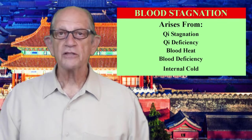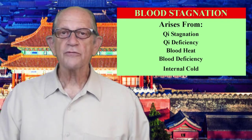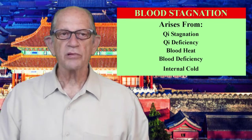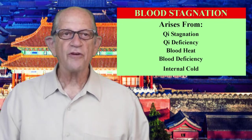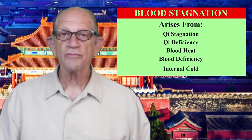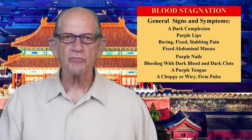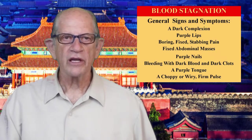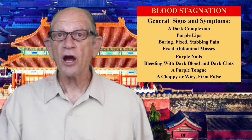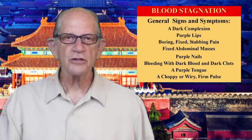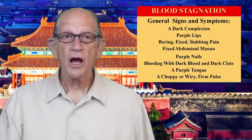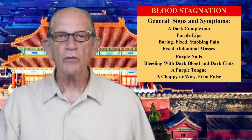The fourth is blood deficiency. Over time, blood deficiency can cause qi deficiency. If qi is too weak, it stagnates, and if qi stagnates, blood will eventually stagnate. The final syndrome is internal cold. Cold slows blood circulation. The general signs and symptoms of blood stagnation are a dark complexion, purple lips, boring, fixed, stabbing pain — which is the primary symptom — abdominal masses that do not move, purple nails, bleeding with dark blood and dark clots, a purple tongue, and a choppy or wiry firm pulse.